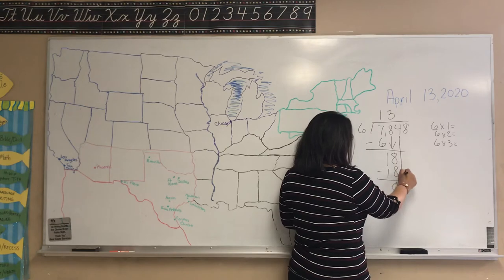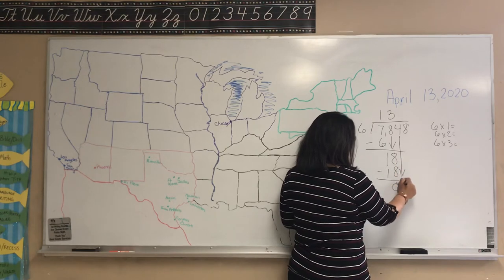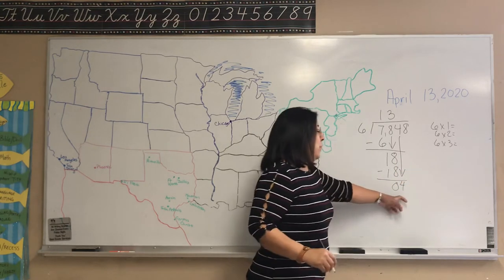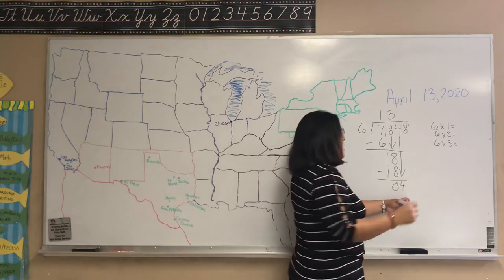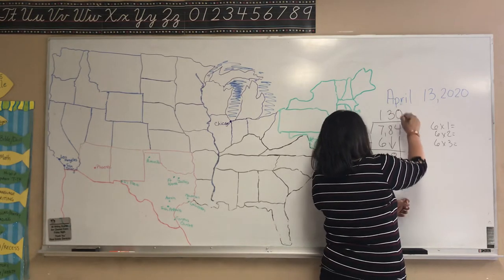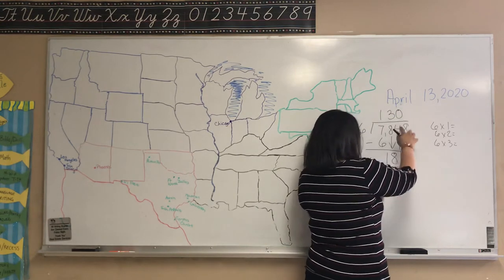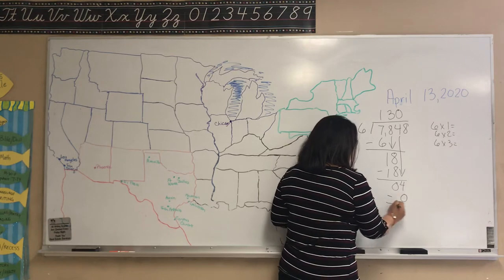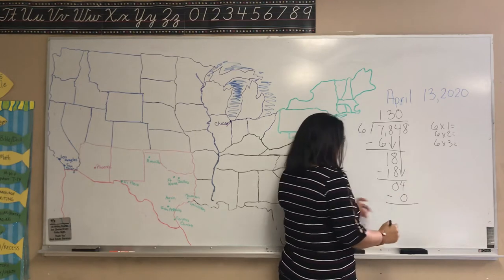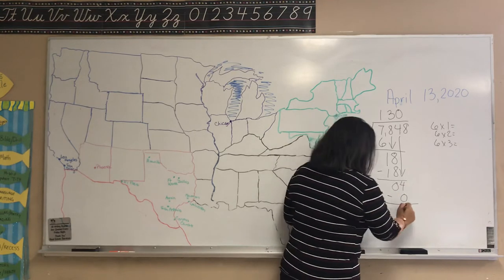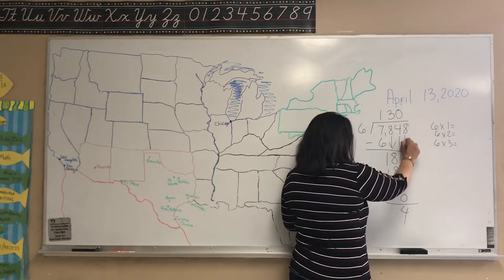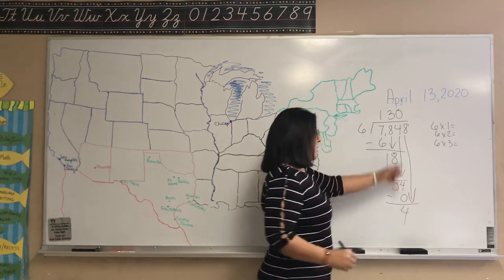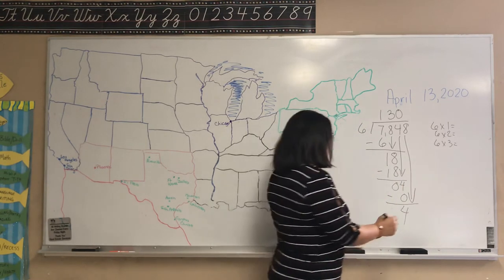Now you're going to bring down the next number — four. Six will go into four zero times, so you're going to put the zero right on top of the four. Six times zero is zero. You're going to subtract. Then you're going to bring down your eight — that's the last number.